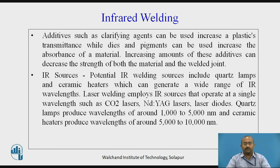Additives such as clarifying agents can be used to increase a plastic's transmittance, while dyes and pigments can be used to increase the absorbance of the material. However, increasing the amount of these additives can decrease the strength of both the material and the weld joint.